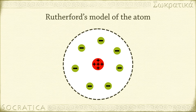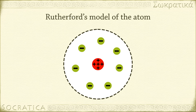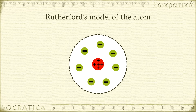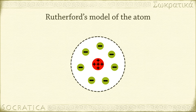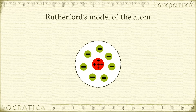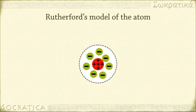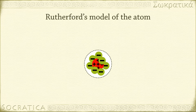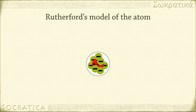Again, the atomic model had to be updated to take this new information into account. There was a problem almost immediately seen with Rutherford's model, however. If the electrons are out in this empty space around the positively charged nucleus, what is keeping them from just giving in to the electrostatic attraction towards the nucleus? Why doesn't the atom just collapse on itself from all that attraction?